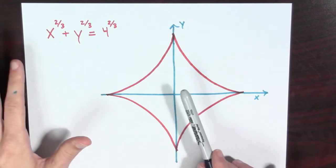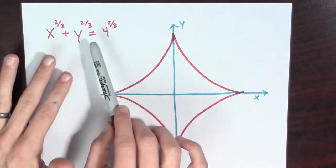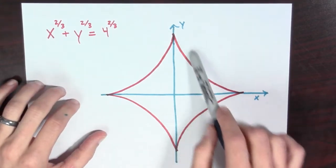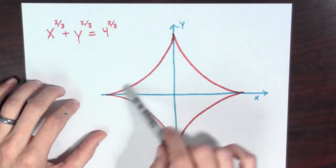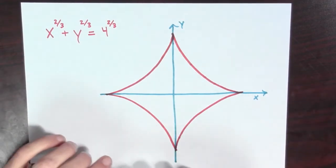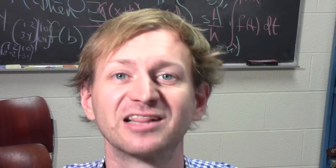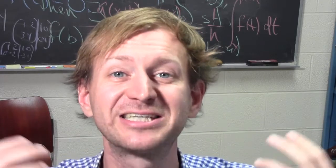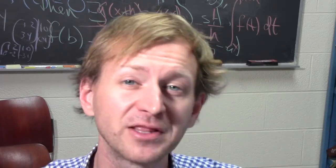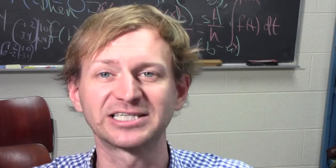Nevertheless, it is a relationship between x and y, and we can find the formula for the slope of the tangent line using implicit differentiation. Now that we know what the curve looks like, let's use calculus and implicit differentiation to give us a formula for the slope of the tangent line.